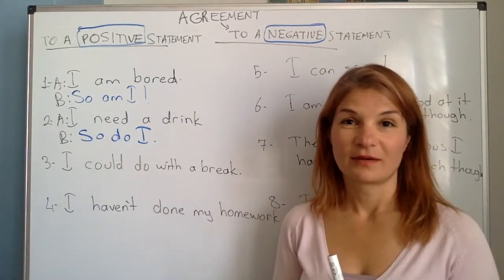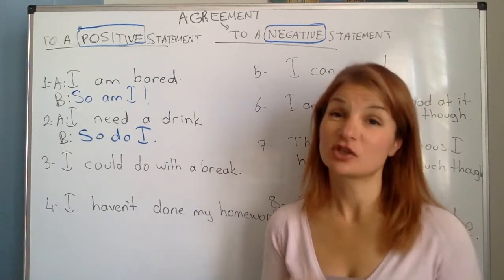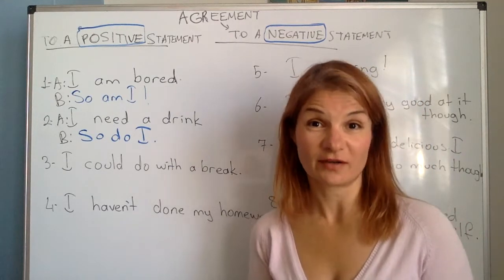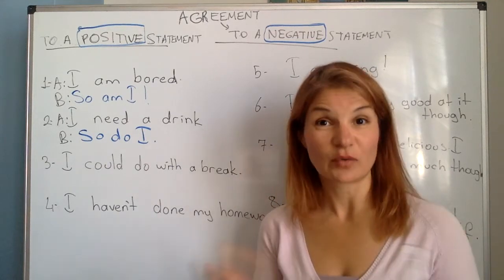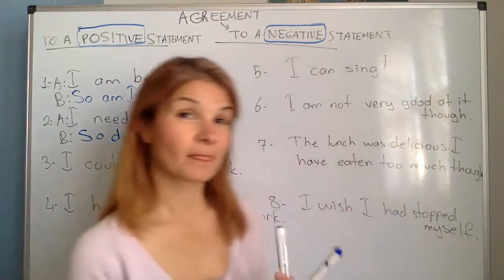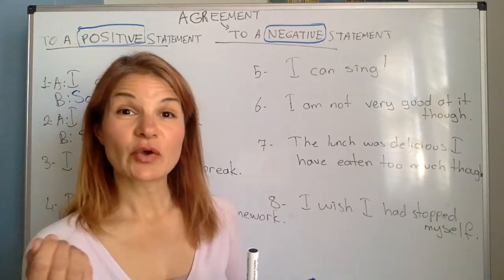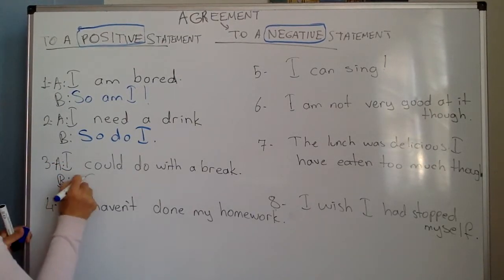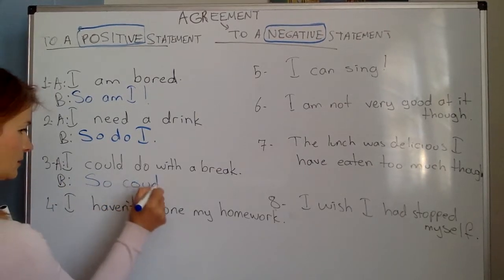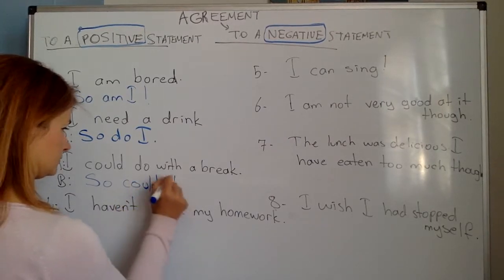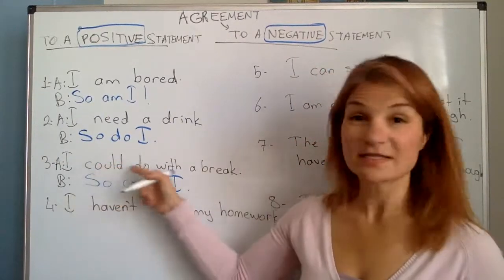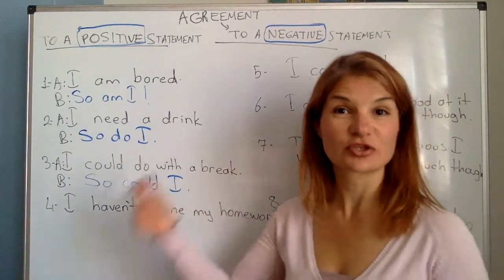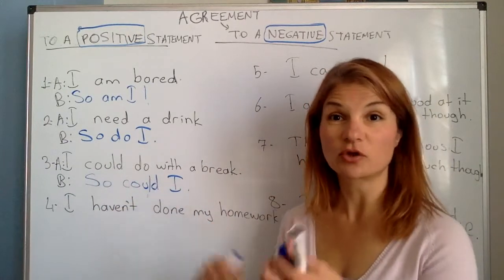The third example: I could do with a break — meaning I need a break. You've been working hard as well, so what would you say? So could I. I copy the auxiliary 'could', and use question word order: so could I, not I could.